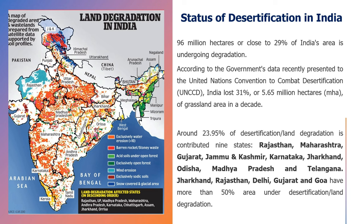Jharkhand, Rajasthan, Delhi, and Gujarat have more than 50 percent of their area under desertification or land degradation. On the land degradation map of India, yellow indicates extensive water erosion, particularly in the Indo-Gangetic belt and Rajasthan. In Rajasthan, wind erosion is the main reason for soil degradation, while in Jammu, Kashmir, and Ladakh, snow-covered or glacial areas are prominent. These are the multiple reasons for soil degradation or desertification in India.